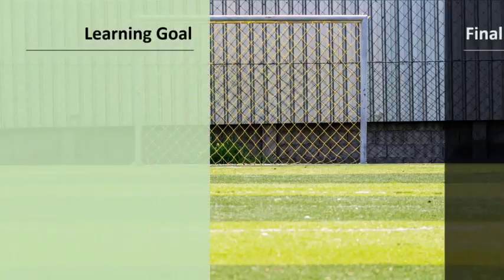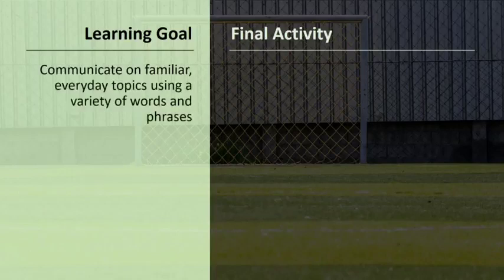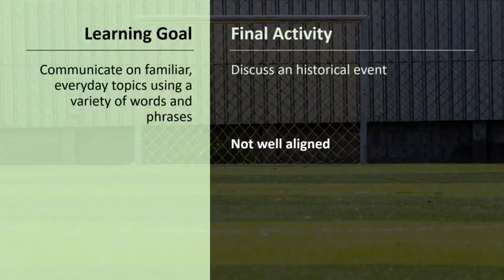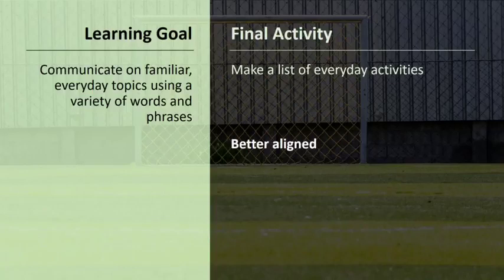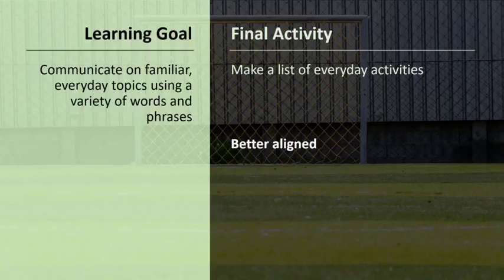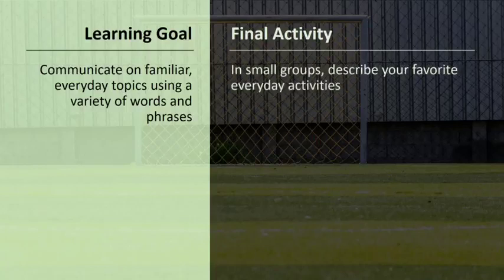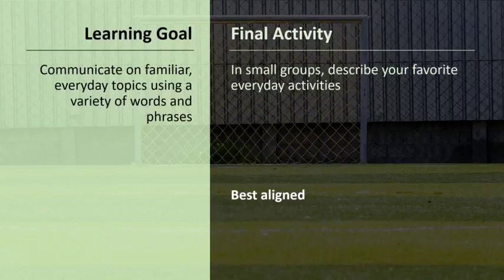For example, imagine that the lesson goal is that students can communicate on familiar everyday topics using a variety of words and phrases. Asking students to communicate about historical events would not be well aligned with the goal because the content is different. Asking students to make a list of everyday activities might be similar in content but stops short of asking students to actually communicate using a variety of words and phrases — making the list might be on the pathway to the goal but doesn't reflect its accomplishment. Asking students to have a discussion about an everyday activity is aligned to both the content — familiar topics — and to the performance expectation: communicate using a variety of words and phrases.